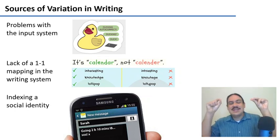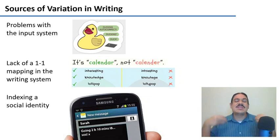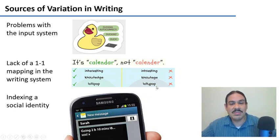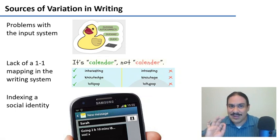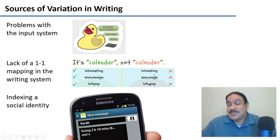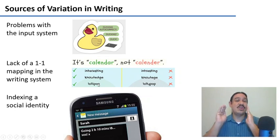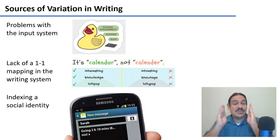Is it 'calendar' or 'calendur'? There's no way to know unless you memorize it — unless you spend years at school in front of books memorizing that 'calendar' is written with this sequence of glyphs. Words like 'interesting', 'knowledge', and 'lollipop' have the same problem — there are perfectly legitimate ways to spell them based on how the phonology of English works. But because of tradition, we have come to spell them in these specific forms. So you can have a mismatch between the phonology of your language and the writing system, making it difficult for speakers to memorize how to spell words.